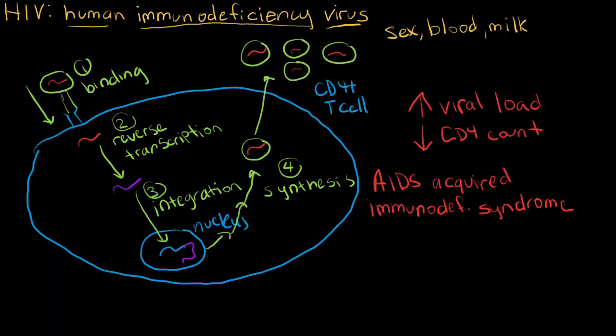When a person has AIDS, their CD4 count is so low that it's hard to mount an immune response to infections. People with AIDS become more susceptible to opportunistic infections — infections that most people don't get because their immune system fights them off. People with AIDS don't have enough CD4 cells to mount a strong immune response, so it is often these opportunistic infections, not HIV itself, that end up killing patients.